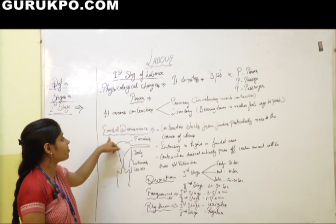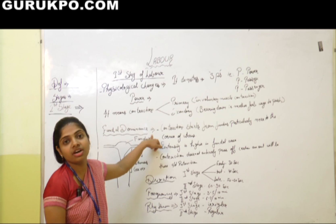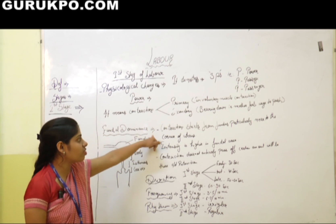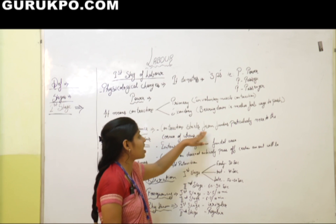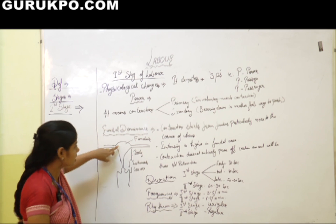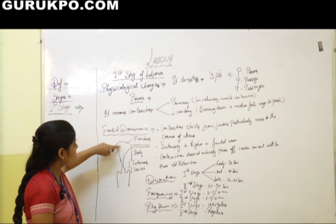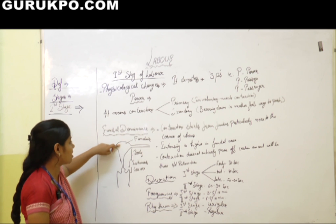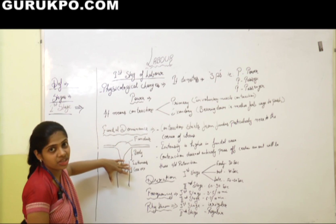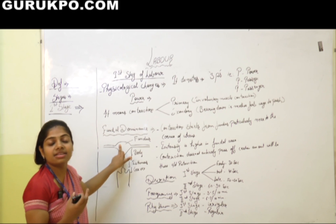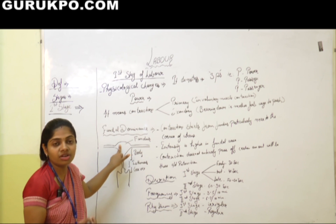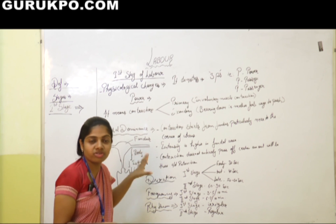This is known as fundal dominance of the uterus. The contraction starts from the fundus, particularly the area of the cornua, passes over the full uterus, and the remaining contraction that does not pass off is known as retraction.